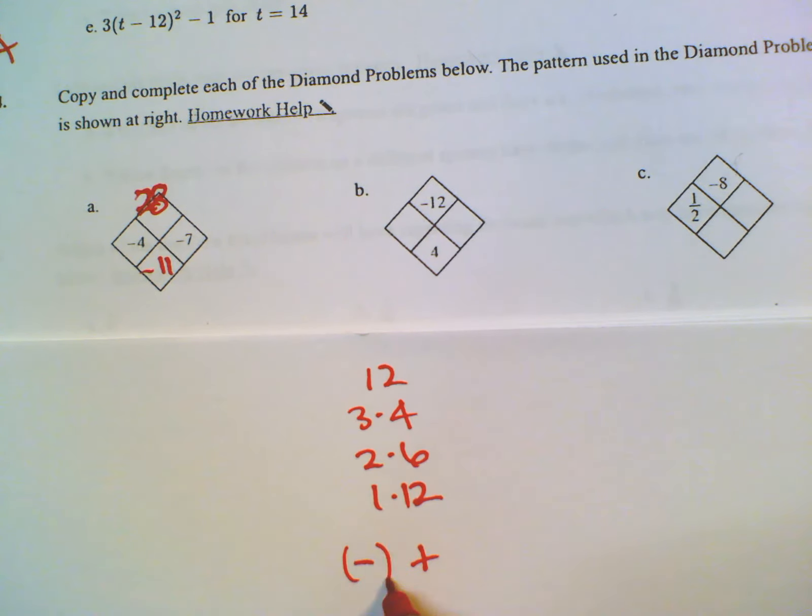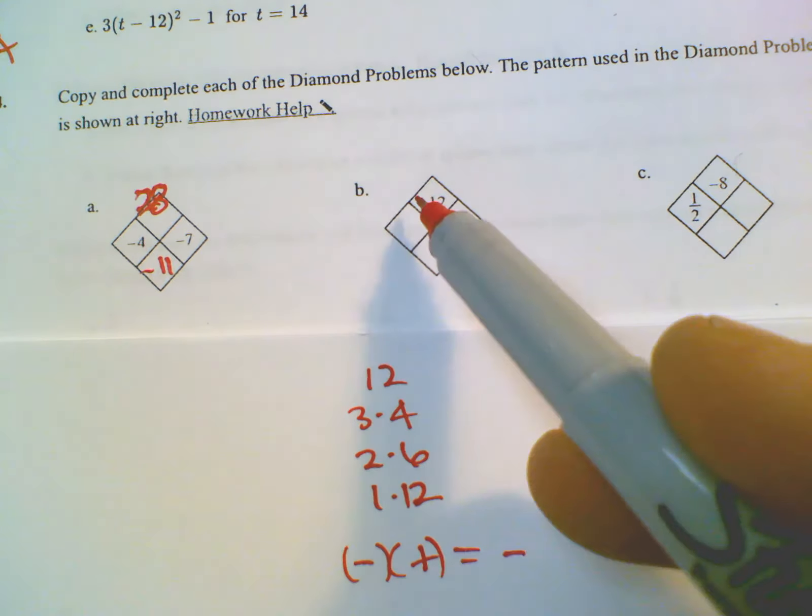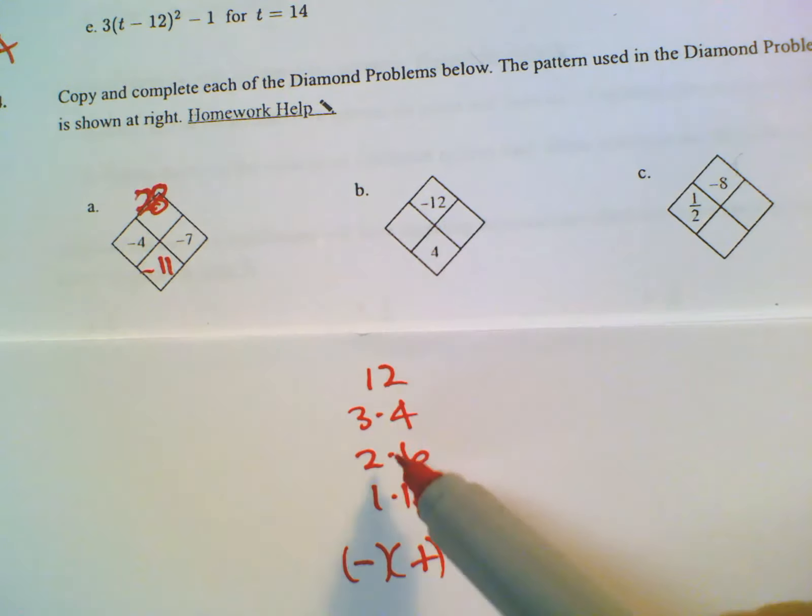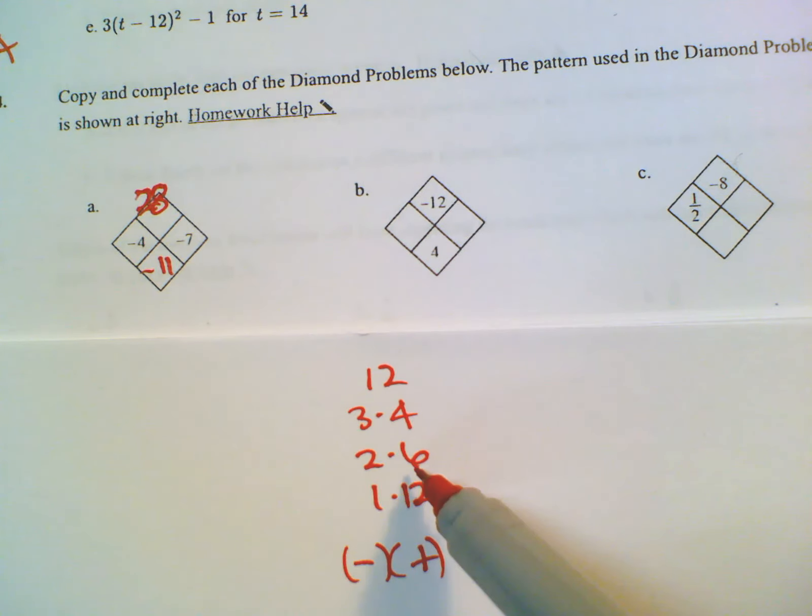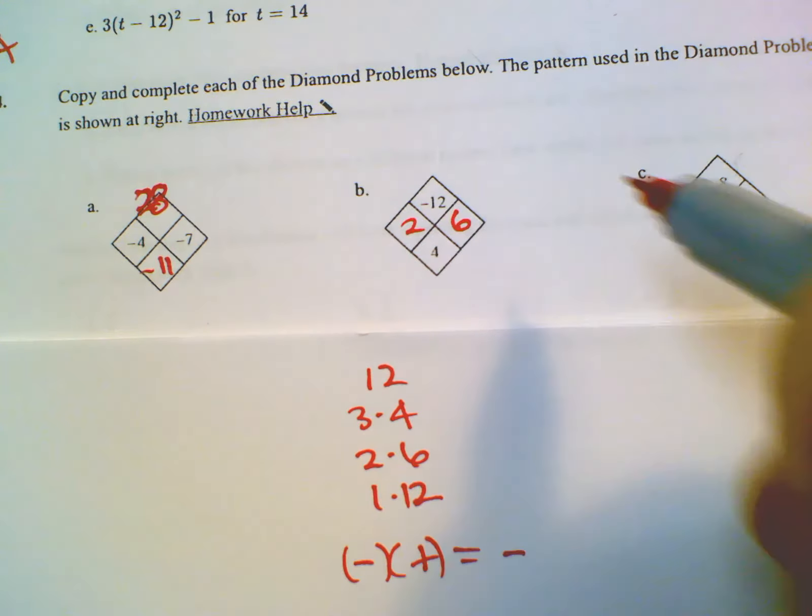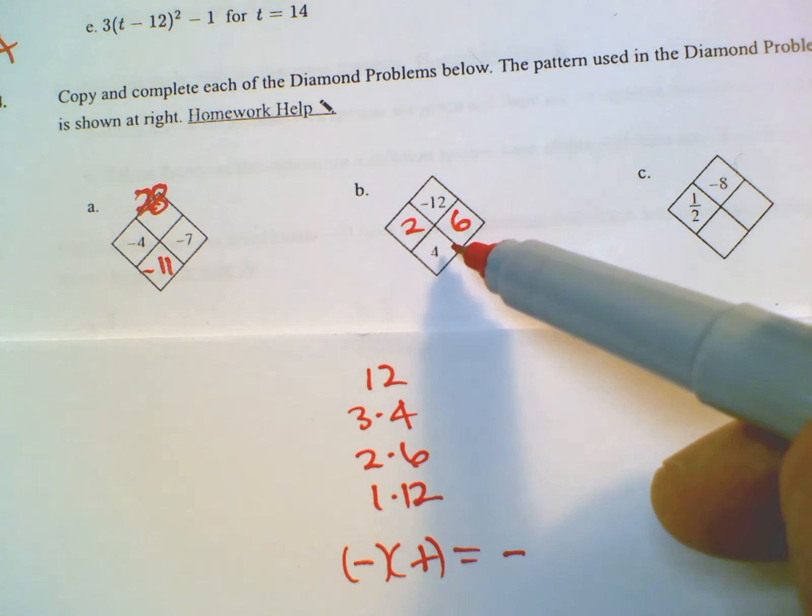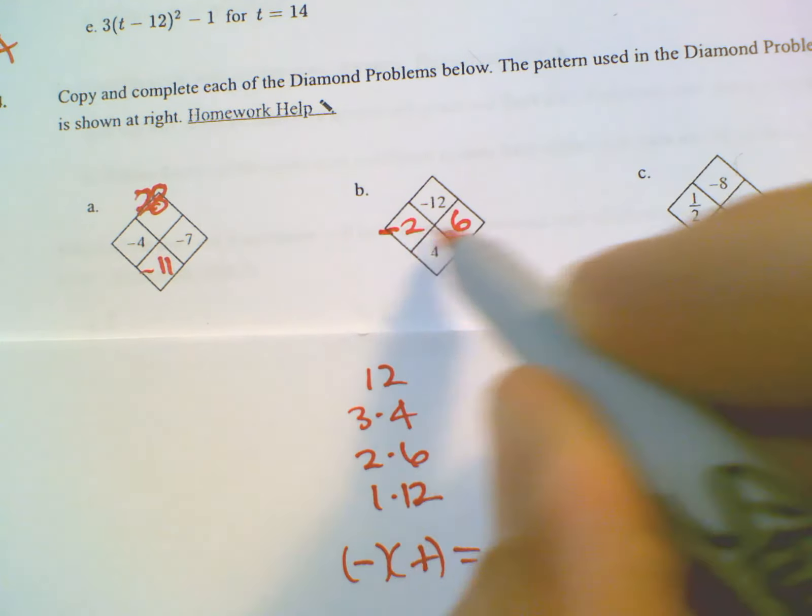That's the only way you're gonna get a negative product. If one's negative and one's positive, then when you add them you really are subtracting the numbers. So which of this set of numbers has a difference of four? The two and the six do. So now I can say I know it's gonna be two and six. Now the question is which one's negative, which one's positive? Well, my sum is positive four, so the bigger number has to be positive in order for them to subtract and still get a positive four.